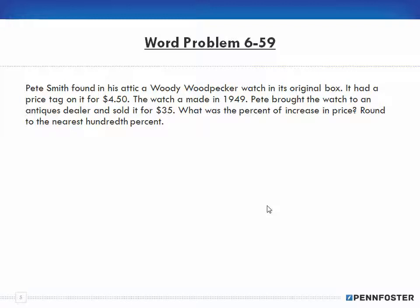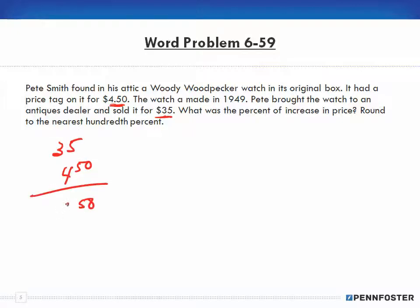Problem 6-59: Pete Smith found in his attic a Woody Woodpecker watch in its original box. It had a price tag of $4.50, and the watch was made in 1949. Pete brought the watch to an antiques dealer and sold it for $35. The difference between $35 and $4.50 is $30.50, which is his profit. The question asks: what was the percent increase in price, rounded to the nearest hundredth?